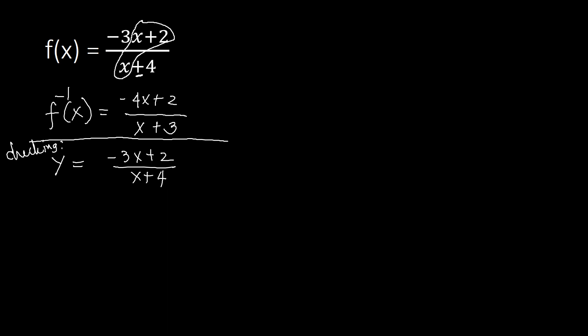Step two: change y to x and x to y. So x equals negative 3y plus 2 over y plus 4. Next, step three: solve for y. Since this is a rational equation with a single term on the right side, we proceed with cross multiplication.